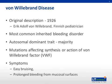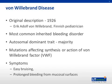Von Willebrand's disease was originally described in 1926 by a Finnish pediatrician, Dr. Erik von Willebrand. It is the most common inherited bleeding disorder, inherited in an autosomal dominant trait in the majority of cases. Mutations can affect synthesis as well as the mechanism of action of the von Willebrand factor. Symptoms that can indicate an underlying disease state are easy bruising as well as prolonged bleeding, especially from mucosal surfaces.